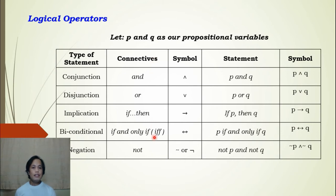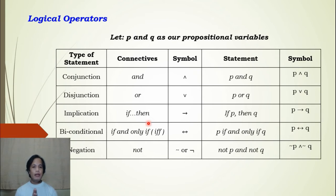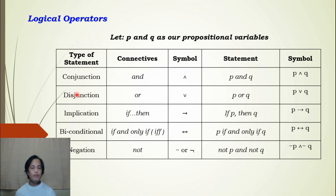For the connectives: conjunction uses the word 'and,' disjunction uses 'or,' implication or conditional uses 'if-then,' biconditional uses 'if and only if,' and negation uses 'not.' In symbols, conjunction uses the wedge symbol (∧), disjunction uses the vee symbol (∨), implication uses the arrow symbol (→), biconditional uses the double arrow symbol (↔), and negation uses either of two symbols — for this video we will use the tilde (~).